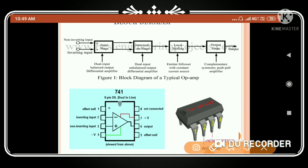The eight-pin configuration has: Pin 1 — offset null; Pin 2 — inverting input; Pin 3 — non-inverting input; Pin 4 — negative supply (V−); Pin 5 — offset null; Pin 6 — output; Pin 7 — positive supply (V+); Pin 8 — not connected.